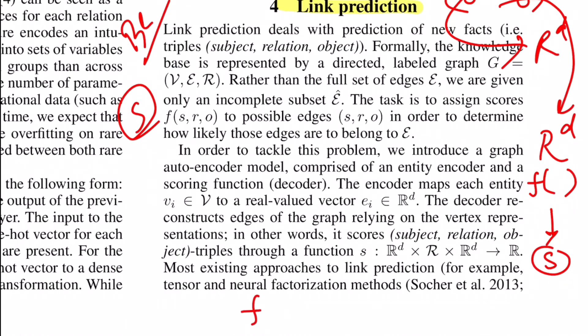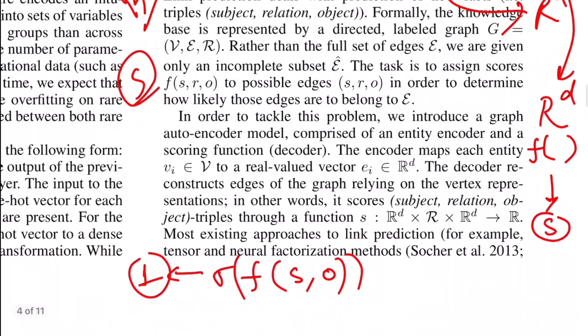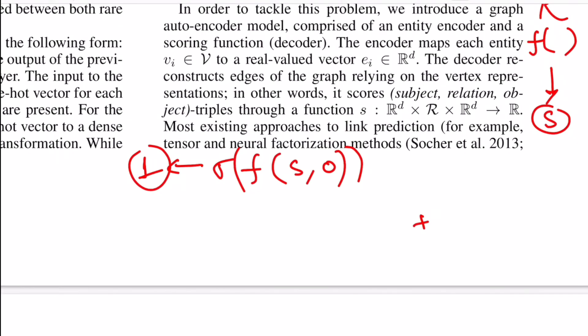So the representation that we pass for let's say subject and then for object, after the sigmoid, should give me a value close to one if the ground truth was one, or this value should be giving the probability near to zero in case the ground truth was also zero. So now the question is how do we generate this training set of negative and positive samples.